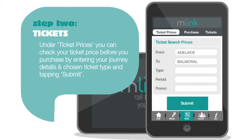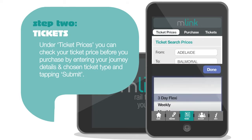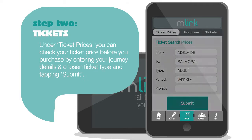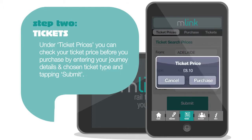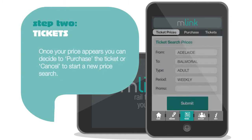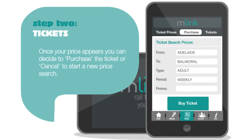Under Ticket Prices, you can check your ticket price before you purchase, by entering your journey details and chosen ticket type, and tapping Submit. Once your price appears, you can decide to purchase the ticket or cancel to start a new price search.